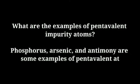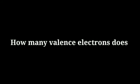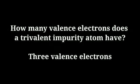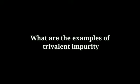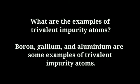What are the examples of pentavalent impurity atoms? Phosphorus, arsenic, and antimony are examples of pentavalent atoms. How many valence electrons does a trivalent impurity atom have? It has three valence electrons. What are the examples of trivalent impurity atoms? Boron, gallium, and aluminium are examples of trivalent impurity atoms.